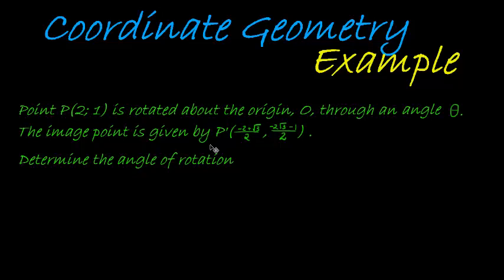This is the last example we will do on rotation around the origin through any angle theta. Point P, which has coordinates (2, 1), is rotated around the origin through an angle theta. The angle of rotation is unknown. The image point is given as P-accent at a certain coordinate. We need to determine the angle of rotation.